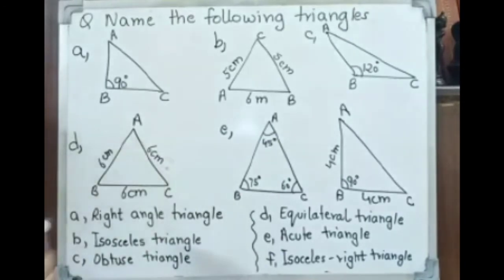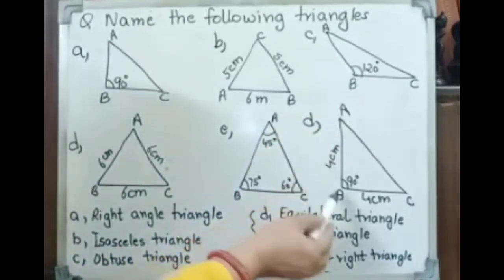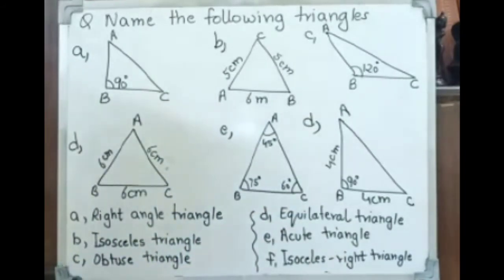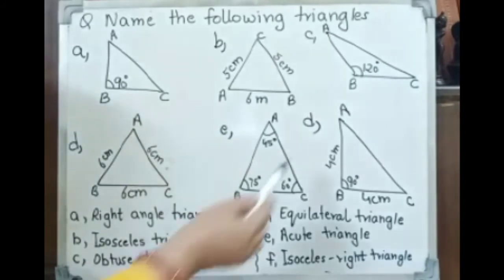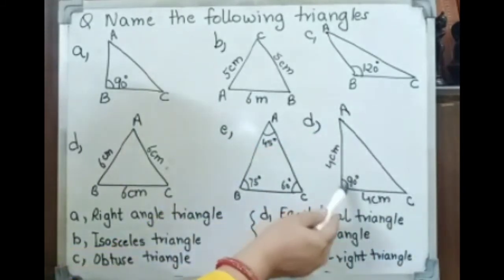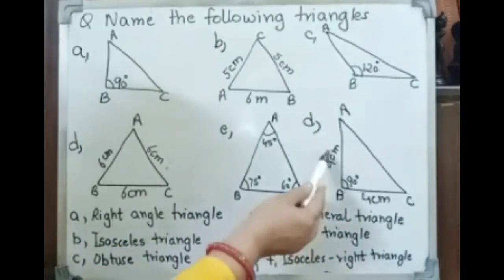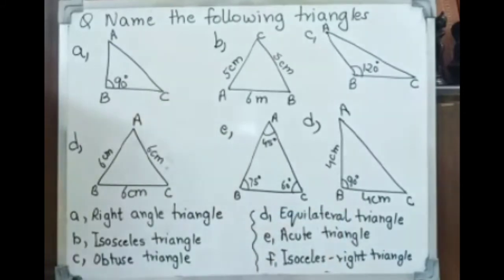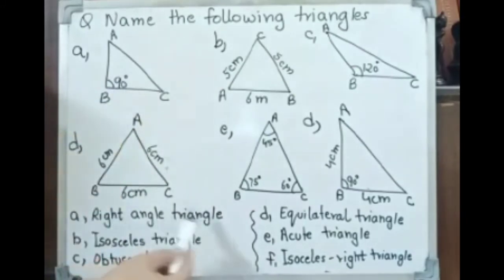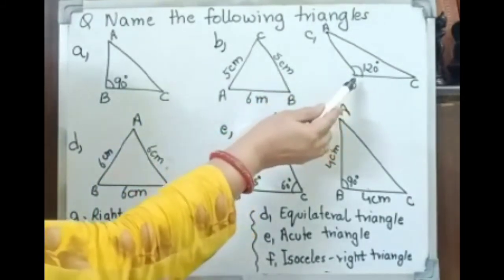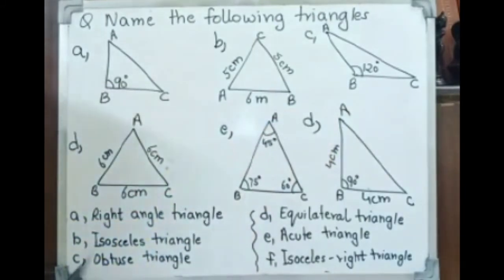Next, triangle F: triangle ABC has side AB 4 cm, BC 4 cm, and angle B is 90 degrees. So two sides are equal and one angle is 90 degrees — that is a combination: isosceles right triangle. Whenever one angle is 90 degrees, that is a right angle triangle; two sides are equal means isosceles triangle. Any one angle more than 90 degrees and less than 180 degrees is called an obtuse triangle.